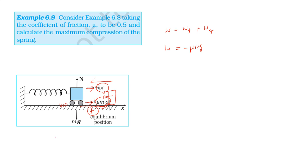The friction force is mu into N. N is equal to mg, so N equals mg, and friction equals mu into mg. Over displacement x, the work done by friction is mu mg x. The work done by the spring, where force is opposite to displacement, is minus half k x squared.